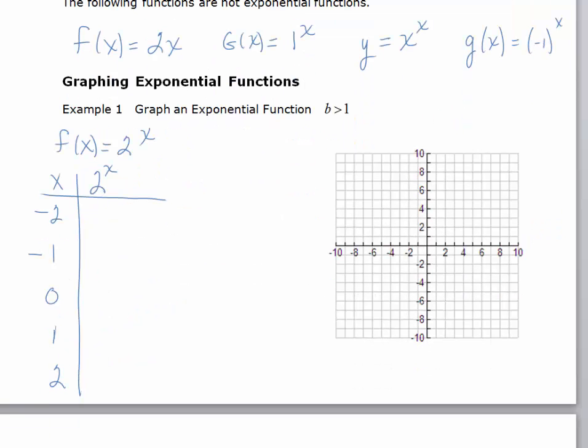Let's graph an exponential function by evaluating the expression for some values, and we'll fill in the table. For x equals negative 2, we want to graph f(x) equals 2 to the x. It's going to be 2 to the negative 2, which is 1 over 2 squared, which equals 1 fourth.